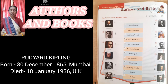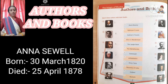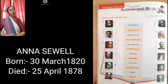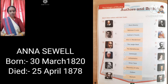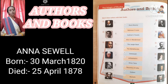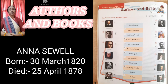The tenth one is Anna Sewell. The name of her book is Black Beauty. Anna Sewell was born on 30th of March 1820 and died on 25th of April 1878. She is an English novelist known for writing children's classic stories like Black Beauty, which is a very famous story.